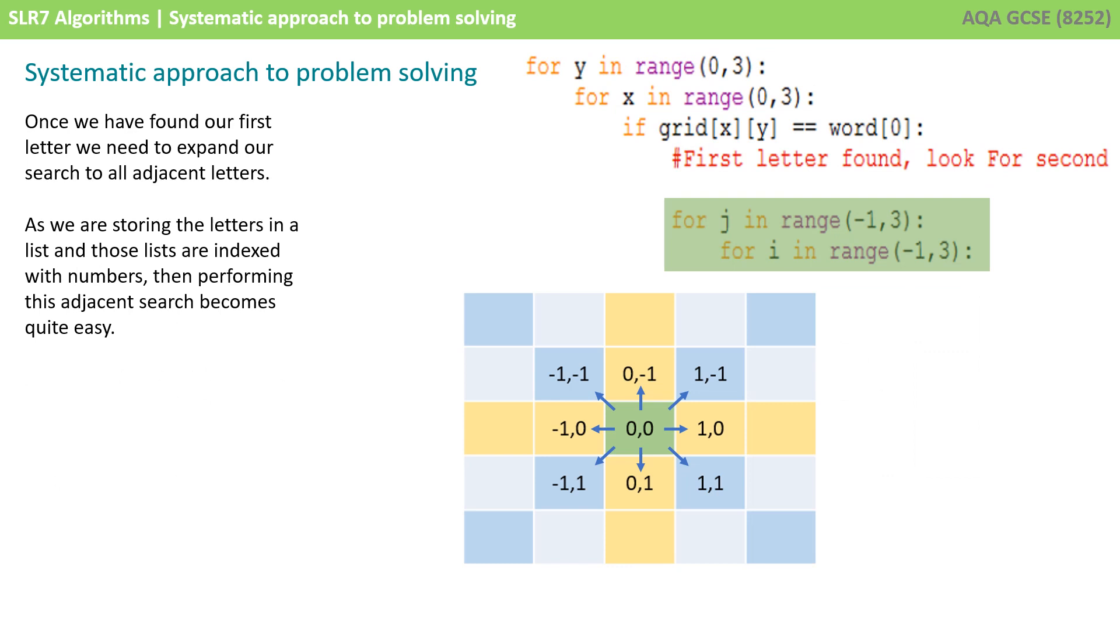So, once we've found the first letter, we then need to expand our search to the adjacent letters. So, we need to look at the one in the top left, we need to look at one above, the one in the top right, the one to the left, the one to the right, the one to the bottom left, the bottom and the bottom right. Now, because we're storing all our letters in the grid in two lists, and we've got some numbers, then we can index those items and it can become quite straightforward. So, you can see that if we're going to check the letter that is diagonally up to the left of the one that we're looking for, then it would have the relative coordinates of minus 1 and minus 1 from our original position. So, in both the x and y, we need to check all the numbers from minus 1 to 1, that's minus 1, 0 and 1. For both the x and y, we need to add these offsets to our original x and y positions.